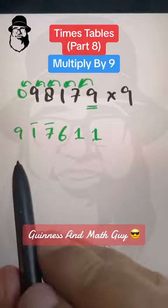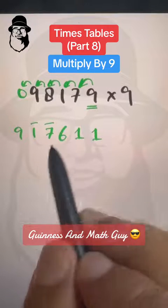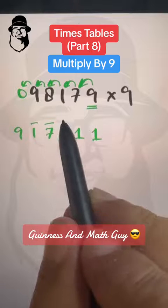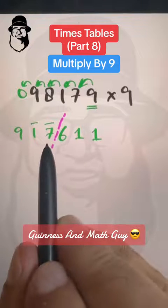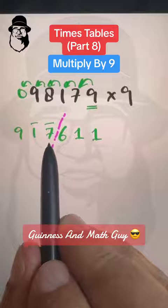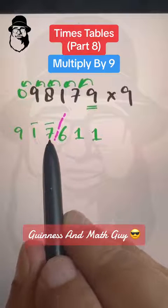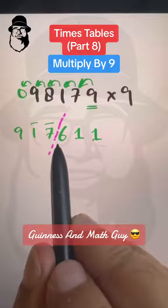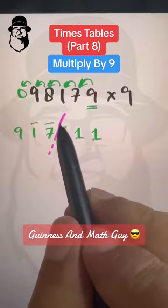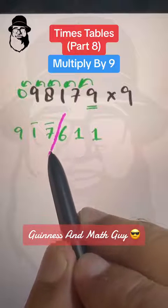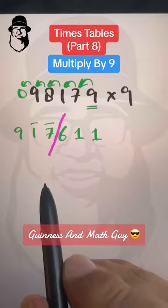Now be careful here. When we have bar numbers, we can separate the number where the bar numbers end and the positive number starts — going from left to right. Where the bar number ends and the positive number starts, there we can split this number.